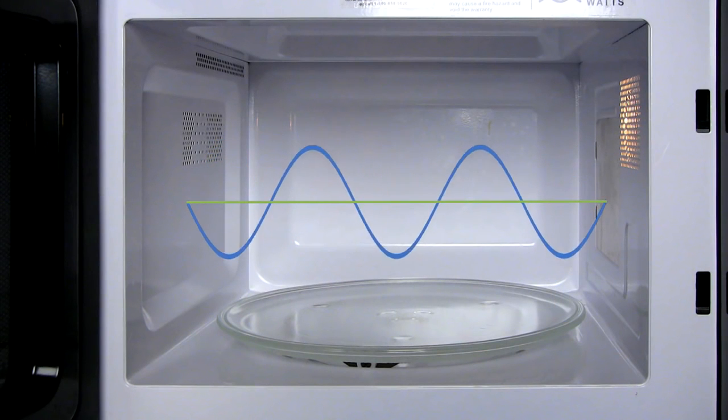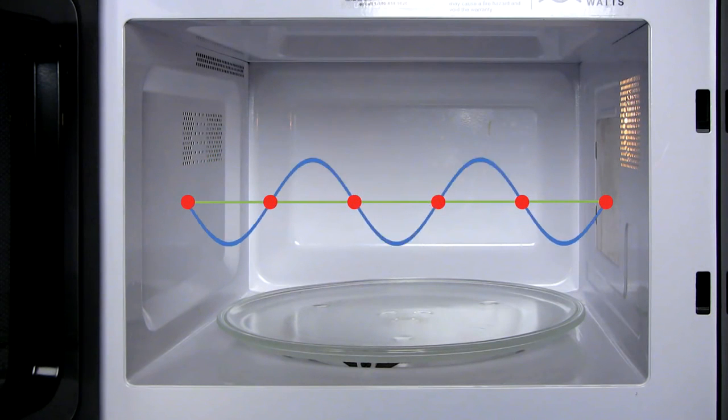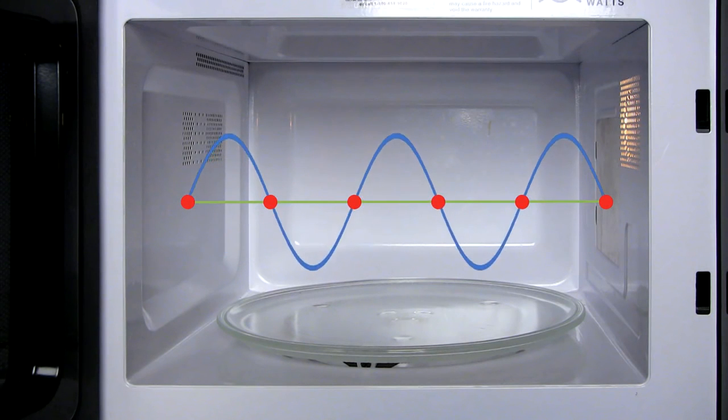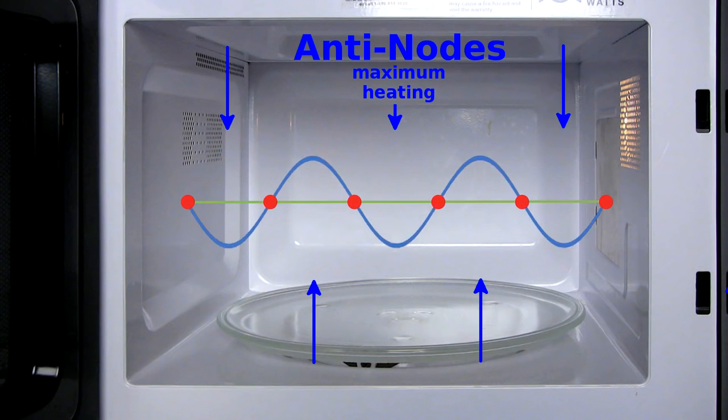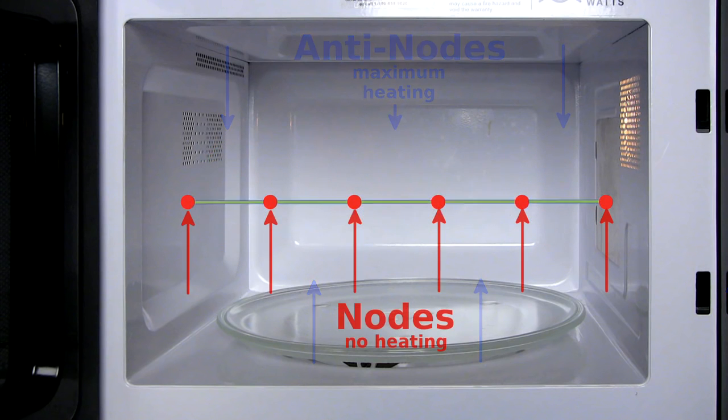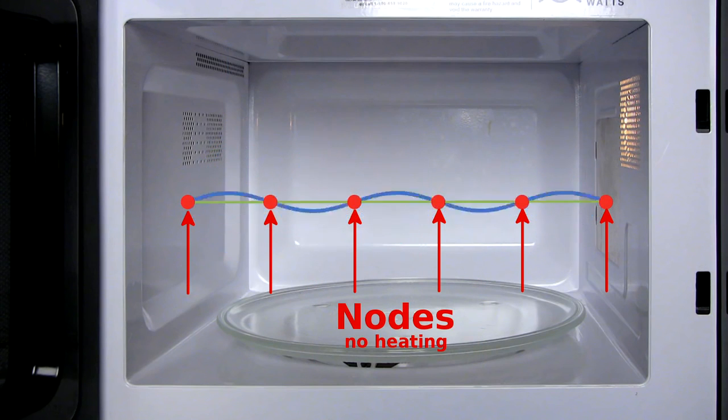The three-dimensional pattern of waves is difficult to predict, but the principle can be seen by looking at the waves in a single dimension. The peaks and valleys in the wave represent the greatest energy of the wave. The nodes here correspond to the cold spots inside the chamber.